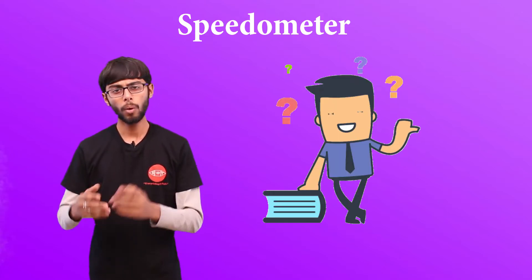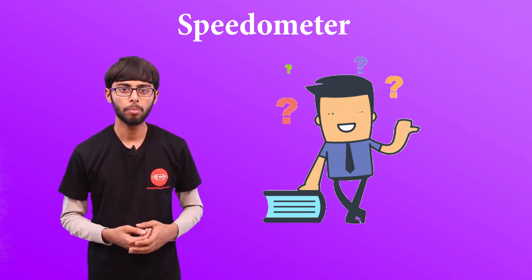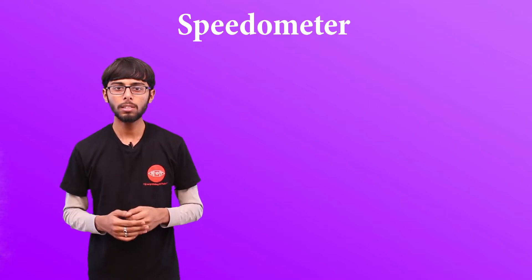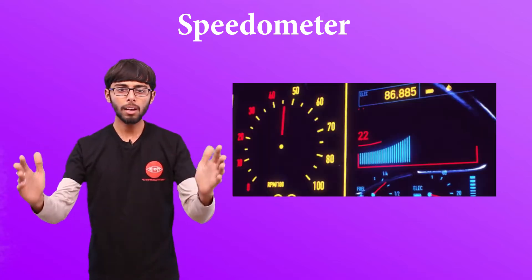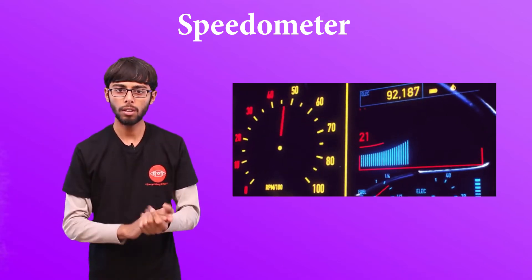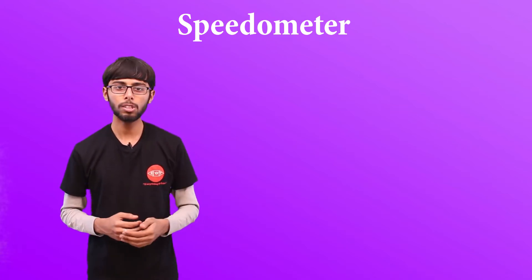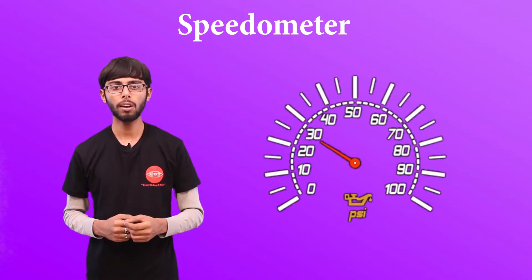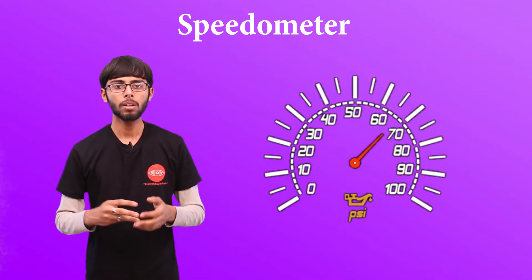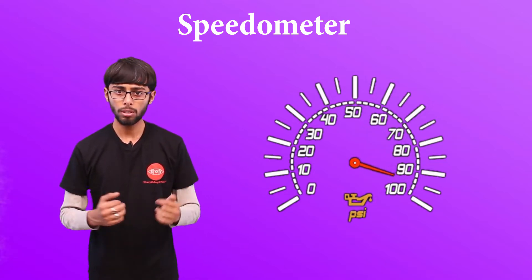How does it work? Why is it so? What does it do? Why do we need it? If you take a closer look and observe vehicles, you will see a big cluster of gauges and meters right in front of the driver. In this cluster of meters, there is a meter called a speedometer, which of course tells us the speed.